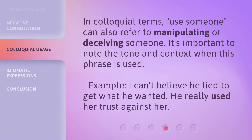In colloquial terms, 'use someone' can also refer to manipulating or deceiving someone. It's important to note the tone and context when this phrase is used. Example: I can't believe he lied to get what he wanted — he really used her trust against her.